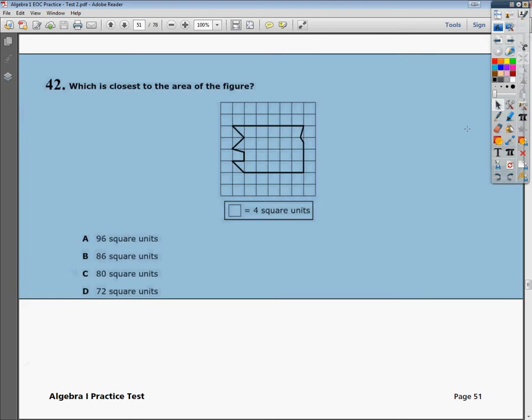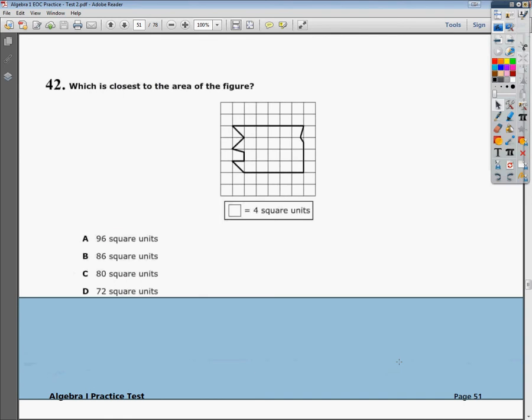Welcome, this is the Algebra 1 practice test 2, question number 42. The question asks: what is closest to the area of the figure? And they give you this really weird-looking figure.